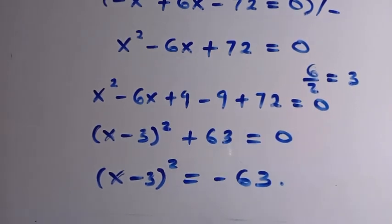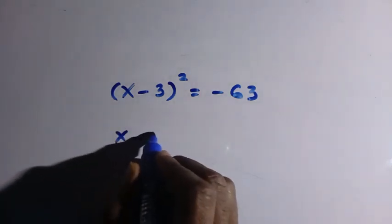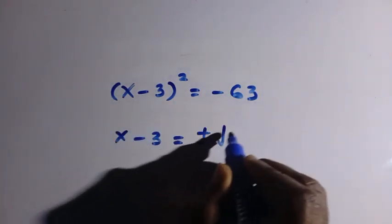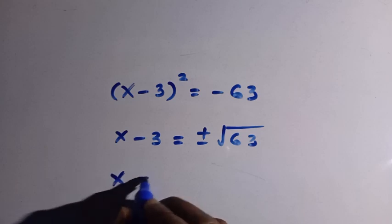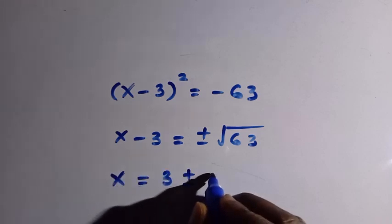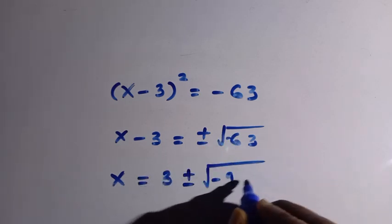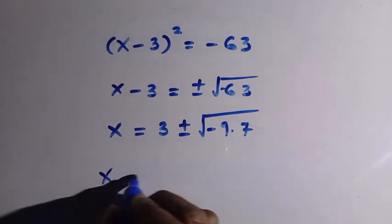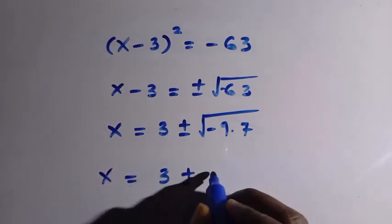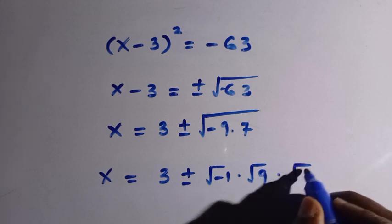Let's take the square root of both sides. We have x minus 3 equals plus or minus the square root of minus 63. Taking 3 to the other side, x equals 3 plus or minus the square root of minus 63. We can write minus 63 as minus 9 multiplied by 7, and by the rules of surds, we separate this as square root of minus 1, multiplied by square root of 9, multiplied by square root of 7.